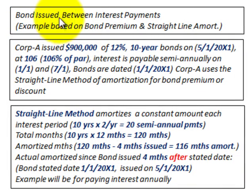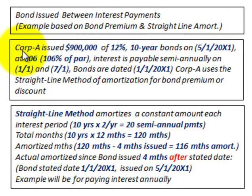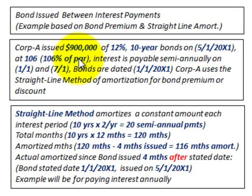We're going to look at issuing a bond between interest payments. The example is based on a bond issued at a premium, and we're using the straight-line method to amortize the bond premium. Corporation A issues $900,000 worth of 12% 10-year bonds on 5-1-20X1, at 106% of par value. Interest is payable semi-annually on 1-1 and 7-1 each year, and the bonds are dated 1-1-20X1.